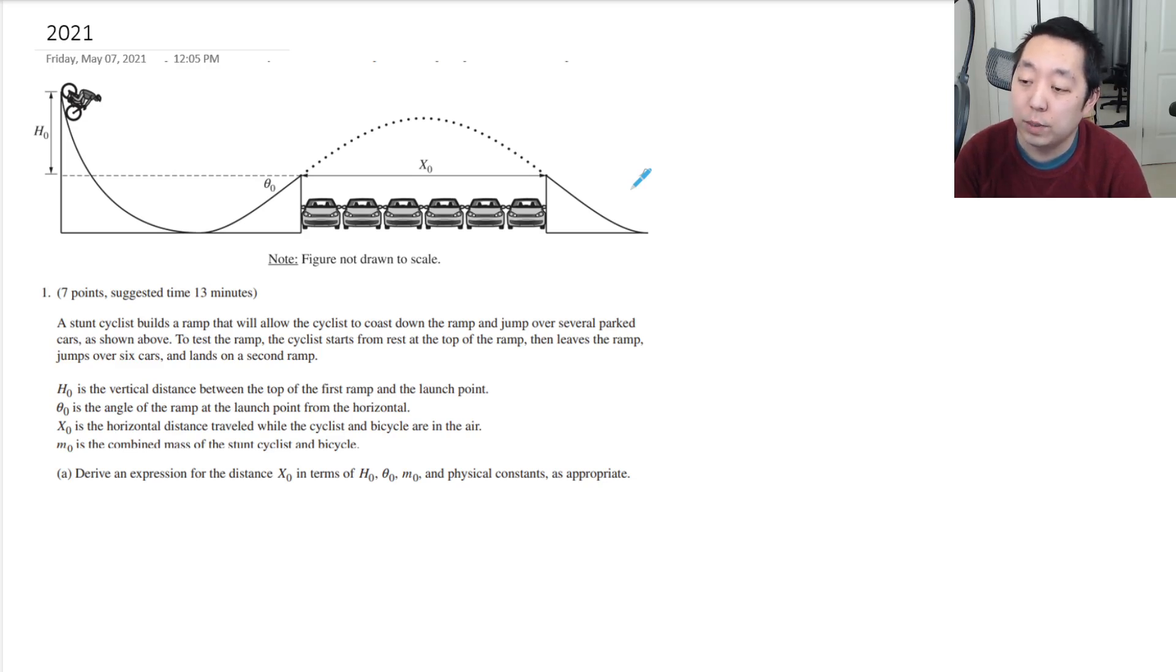H0 is the vertical distance between the top of the first ramp and the launch point. Theta0 is the angle of the ramp at the launch point from the horizontal. X0 is the horizontal distance traveled. M0 is the combined mass of the stunt cyclist and the bicycle. Derive an expression for X0 in terms of H0, theta0, M0, and physical constants.